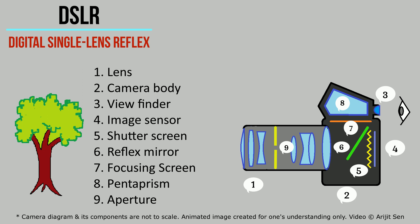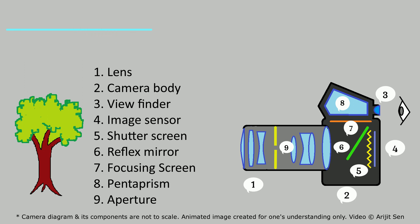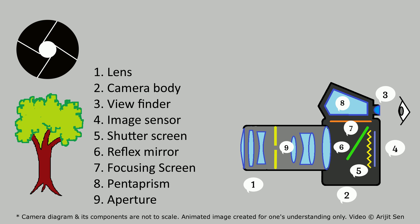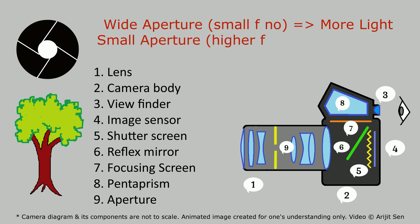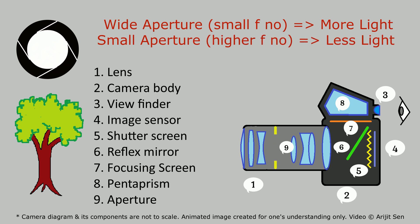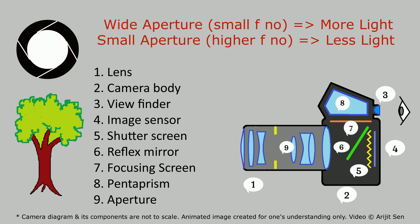The focusing screen and pentaprism reflect the light rays into the viewfinder or eyepiece for us to see the image. Now, coming to the aperture — what is it? The aperture is the hole inside the lens, created by a mechanism called the iris. This hole allows light to pass through it and fall on either the reflex mirror or the sensor. The aperture can control the amount of light passing through it by increasing or decreasing the hole size, as you can see.